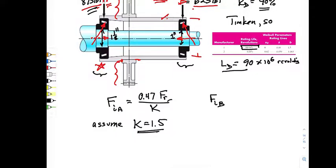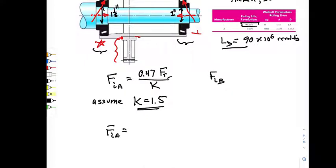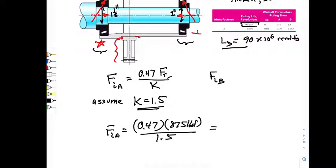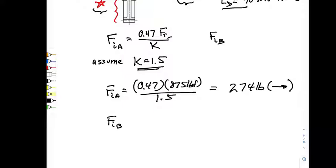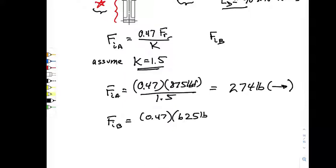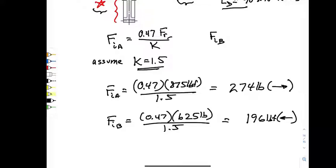Our induced axial load at A is 0.47 times the radial load at A (875 lbf), divided by 1.5, which equals 274 pounds — pointing to the right, trying to compress the shaft and axially load bearing B. The induced axial load at B is 0.47 times the radial load at B (625 lbf), divided by 1.5, giving 196 lbf — pointing toward bearing A.